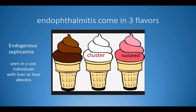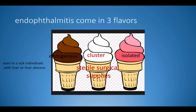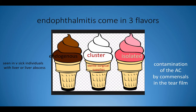But in cataract surgery, we do see the second and third type: cluster endophthalmitis and isolated endophthalmitis. Clusters occur when you have a break in sepsis and a break in the supply of sterile surgical material, with infection rates more than 1 in 300. Isolated endophthalmitis comes from contamination of the anterior chamber by normal flora of the tear film. In the surgeon's hands, we can alter and control both cluster and isolated endophthalmitis.